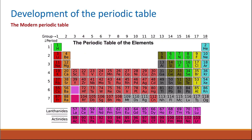The modern periodic table was developed in the 20th century following the discovery of the atomic structure and the atomic number. Instead of being arranged by atomic mass, elements were arranged by atomic number, which refers to the number of protons and electrons. The number of electrons determines the chemical properties of the elements. When arranged this way, repeated periodic patterns in the properties of the elements were found — which is why it's called the periodic table.